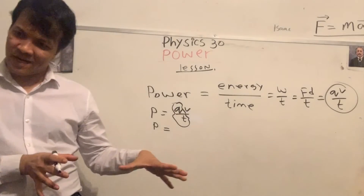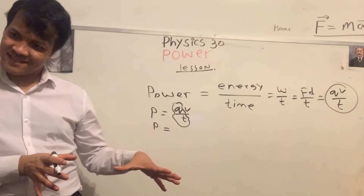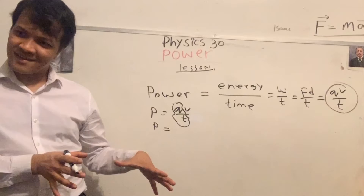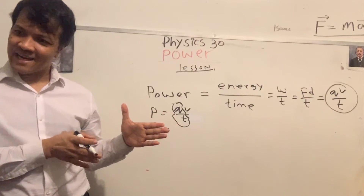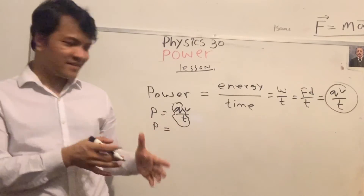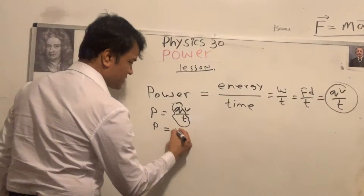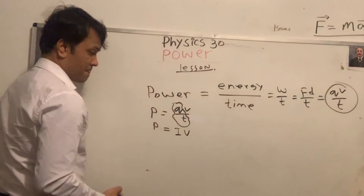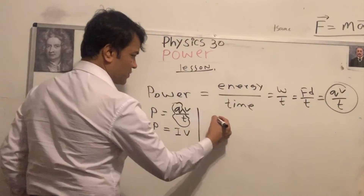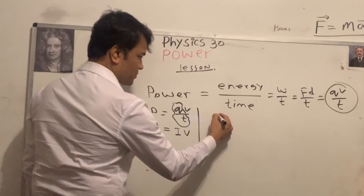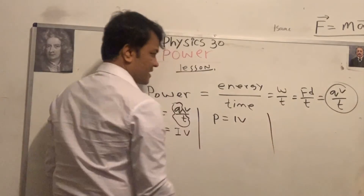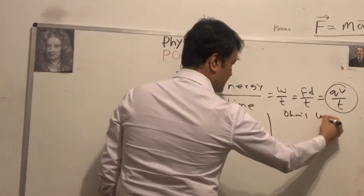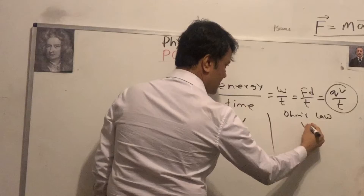q over t is the definition of current! Current I = q/t. So power P = IV. And by Ohm's law, V = IR.